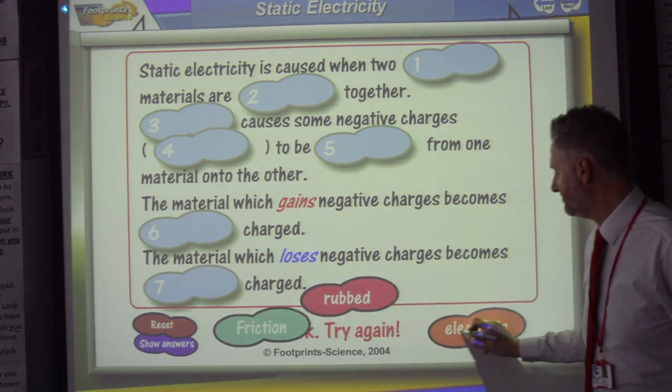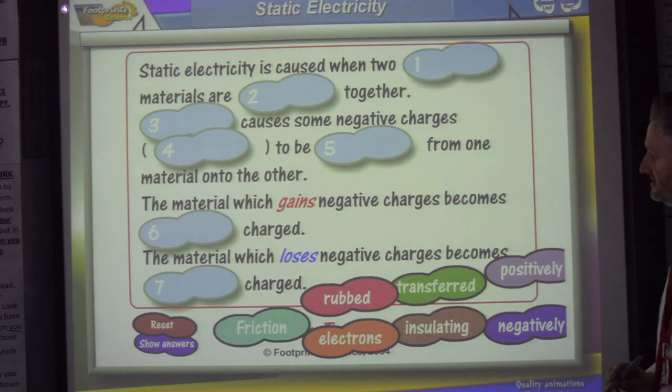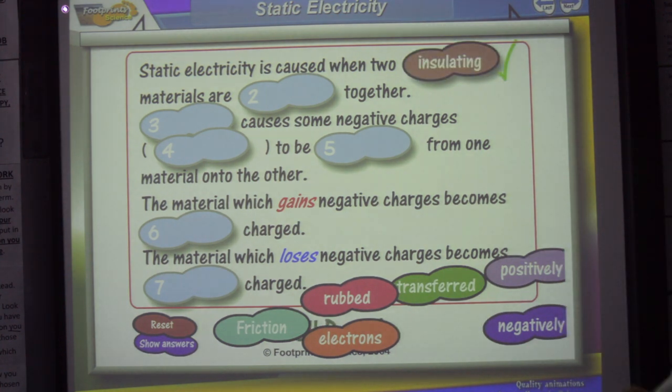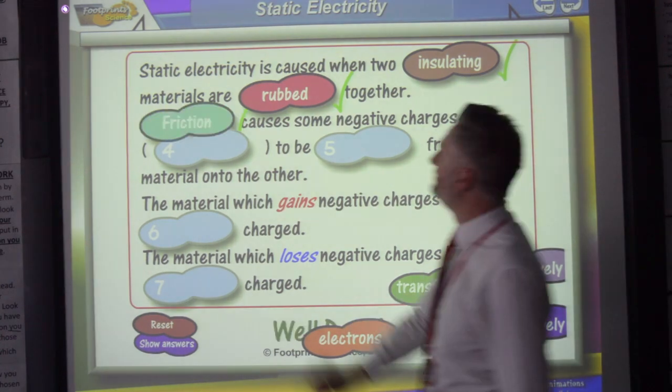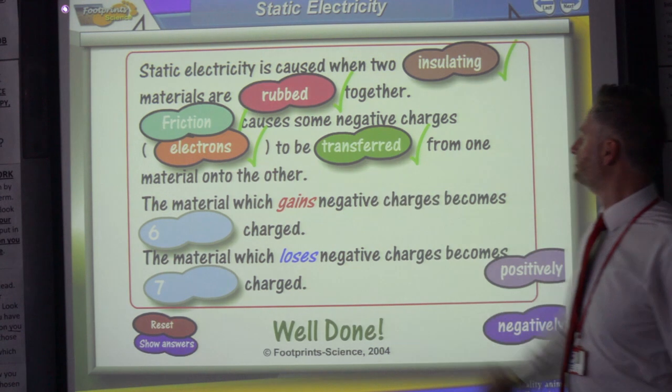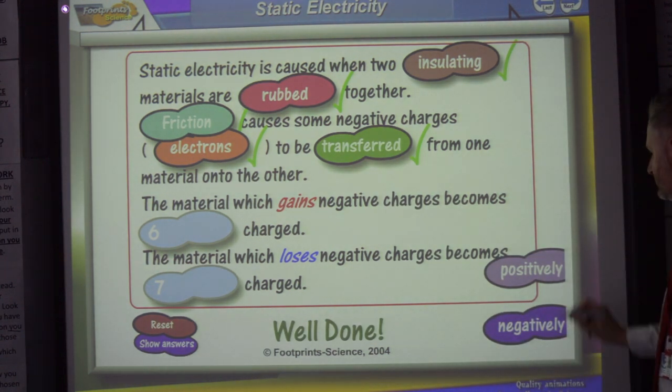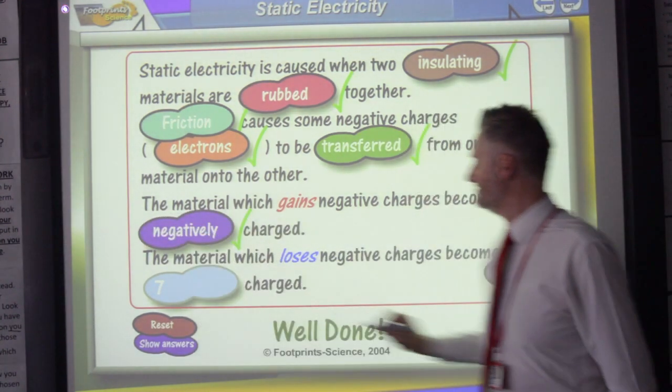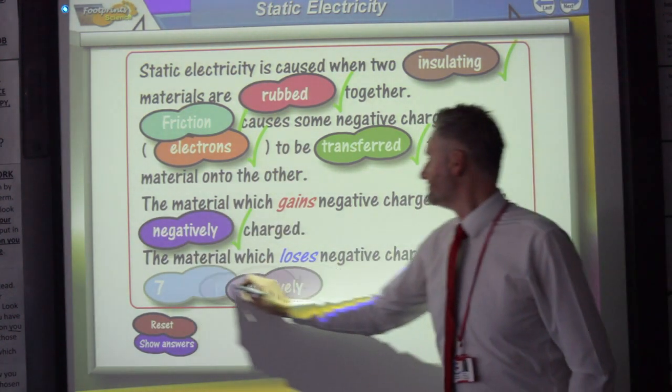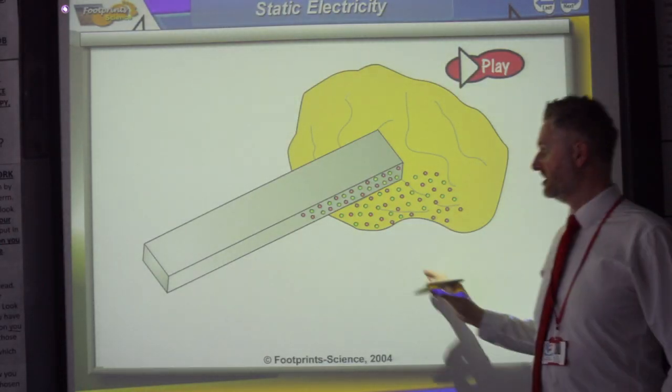So the seven missing words, I'll pop them along the bottom. Okay, have a little look at that. Pause the video. See if you can get them out. So, static electricity is caused when two insulating materials are rubbed together. Friction causes some negative charges, electrons, to be transferred from one material onto the other. The material which gains negative charges becomes negatively charged. And the material which loses negative charges gets left positive. This is the key to the kingdom.